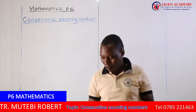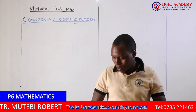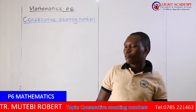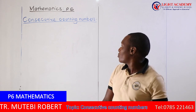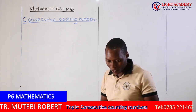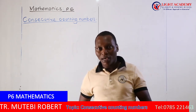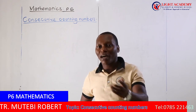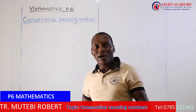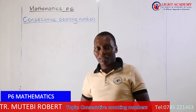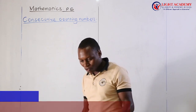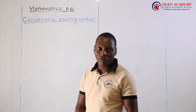I'm going to talk about consecutive numbers. When we talk about the term consecutive, it can be used to mean a list of numbers that are repeated one after the other without skipping any number — following the right order. That is being consecutive.